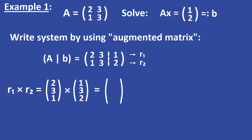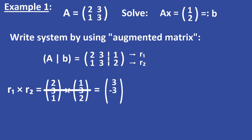We have to compute the cross product of the two rows. For the first entry of the cross product, you cross out the first column and compute the determinant of the remaining 2x2 submatrix. The first entry is equal to 3 times 2 minus 1 times 3, which is equal to 3. For the second entry, you cross out the second column and compute the determinant of that 2x2 submatrix. The determinant is 2 times 2 minus 1 times 1, which is equal to 3, so the second entry is minus 3.